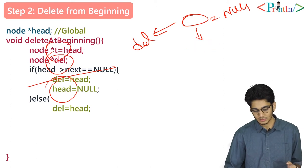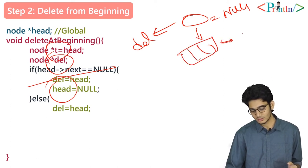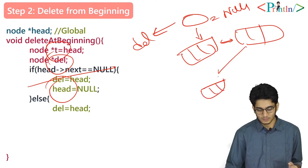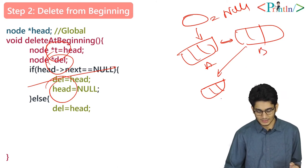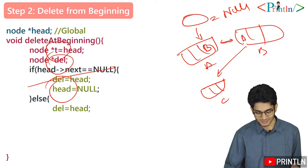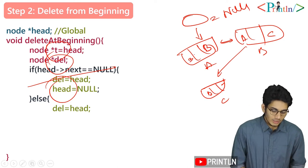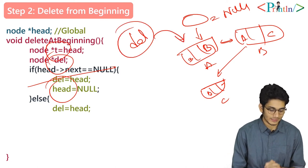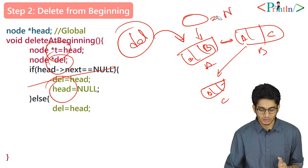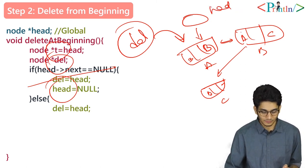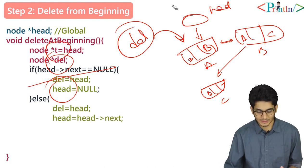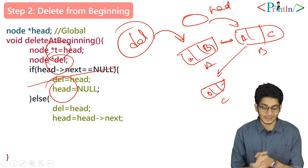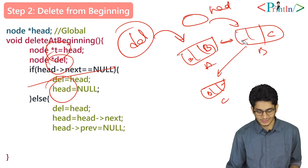In the else case, suppose we have three values: a, b, and c. a next contains b, b next contains c, c prev contains b, and the prev of a and next of c are null. We assign head into del so del points to node a, then move head by setting head equals to head next, so head now points to b.